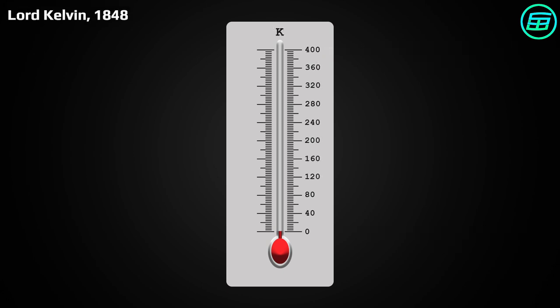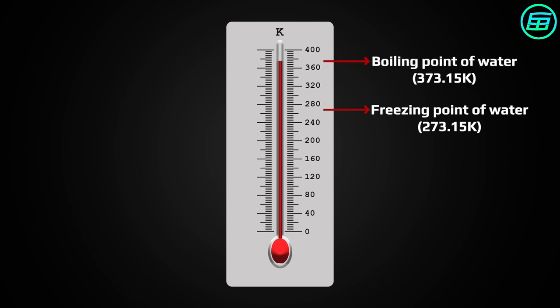In 1848, William Thompson, also known as Lord Kelvin, developed a temperature scale based on absolute zero, theoretically the lowest possible temperature. On the Kelvin scale, pure water freezes at 273.15 Kelvin and boils at 373.15 Kelvin.